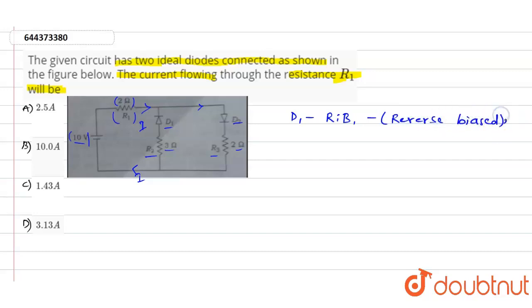In that case, we can say that ideal diode D2 is forward biased. D1 acts as an open switch and D2 will act as a closed switch. So in this particular equivalent circuit, the current flowing through the resistance